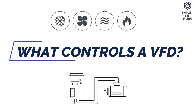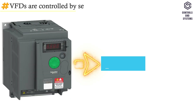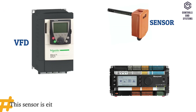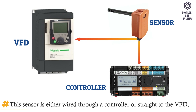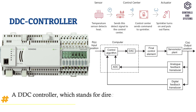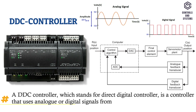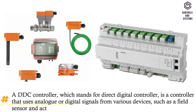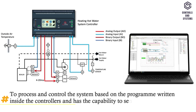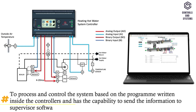What controls a VFD? VFDs are controlled by sensors such as temperature, humidity, pressure, or CO2 sensors. This sensor is either wired through a controller or straight to the VFD. In one example, a duct sensor is wired to a DDC controller. A DDC controller — which stands for direct digital controller — is a controller that uses analog or digital signals from various devices, such as field sensors and actuators, to process and control the system based on the program written inside the controller, and has the capability to send information to supervisor software.